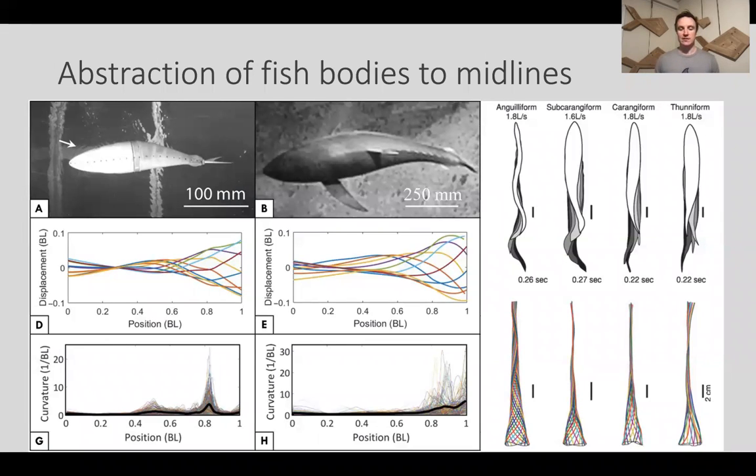One of the most common ways of doing this is by abstracting fish bodies just to midlines. This allows for really easy comparisons between fishes of different sizes, fishes of different species, and even allows for comparisons between fishes and robots as seen in this image here.